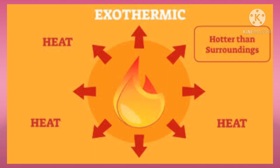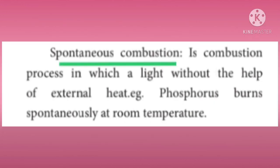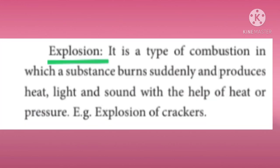There are 3 main types of combustion. The first is rapid combustion: a combustion process in which a substance burns rapidly and produces heat and light with the help of external heat. Example: burning of LPG. The second is spontaneous combustion: a combustion process in which burning occurs without the help of external heat. Example: phosphorus burns spontaneously at room temperature. The third is explosion: a type of combustion in which a substance burns suddenly and produces heat, light, and sound with the help of heat or pressure. Example: explosion of crackers.